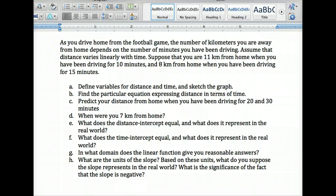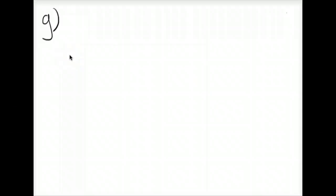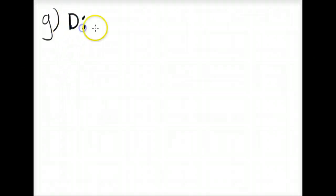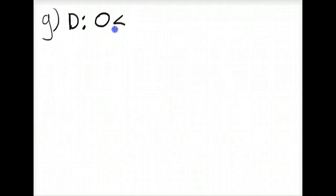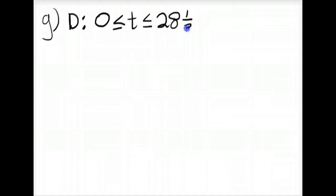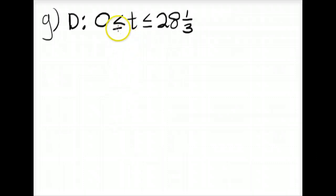For part G, we want the domain in which the linear function gives reasonable answers. The domain represents the independent variable — time. A reasonable domain is 0 less than or equal to T less than or equal to 28 and 1 third, because 0 is when you start driving and 28 and 1 third is when you arrive home. Any value past that would be beyond when you would get home.